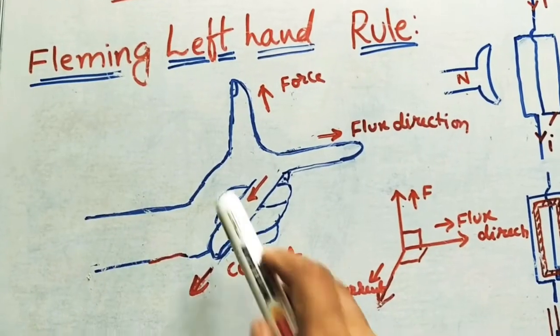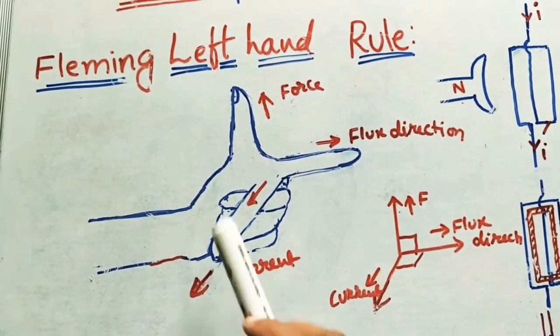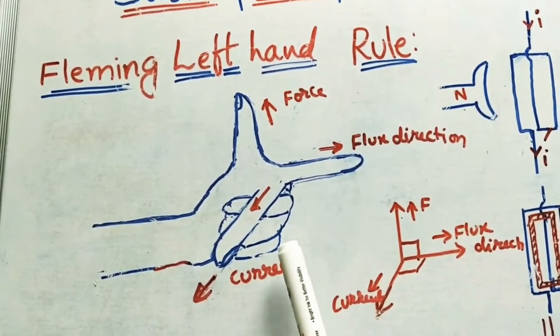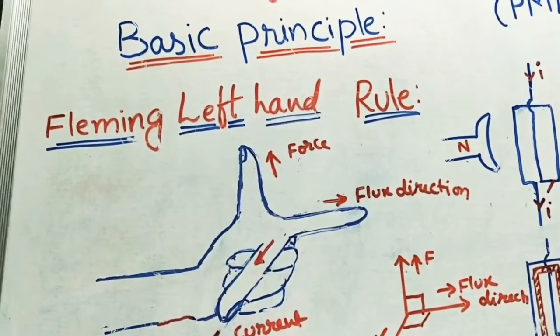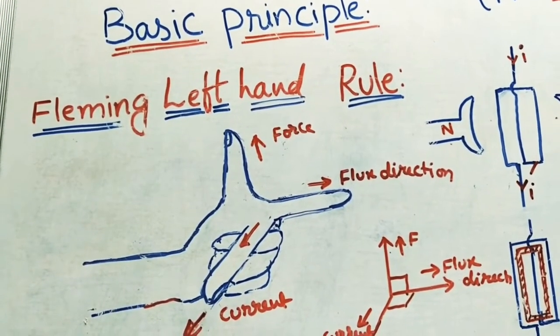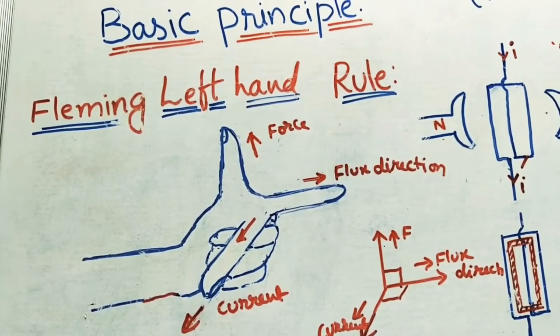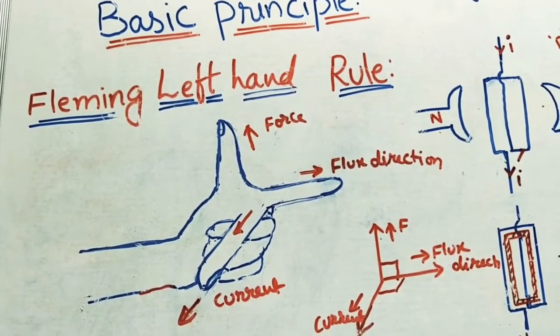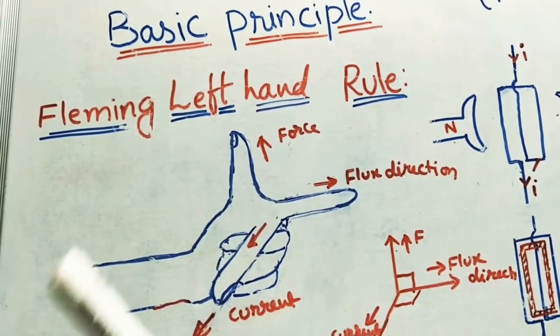In this class we will discuss Fleming's Left Hand Rule. This Fleming's Left Hand Rule is applied as a basic principle in the case of motors and the making of voltmeters, ammeters, and galvanometers. Let us first see what is the basic principle of this rule.